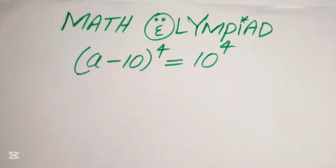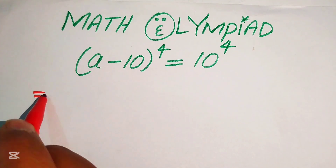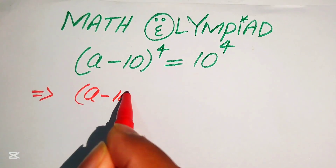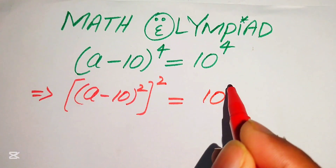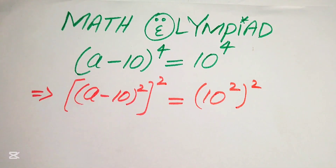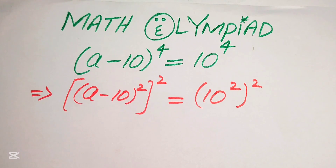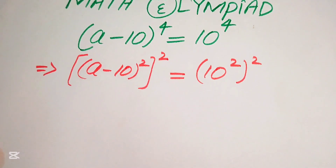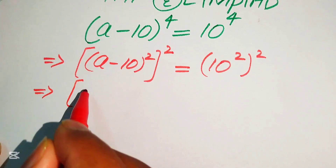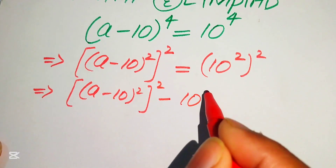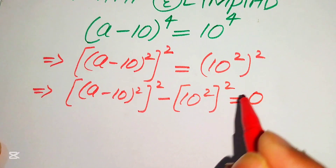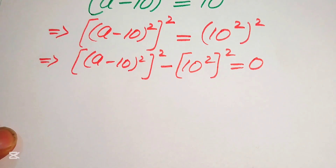The very first step we are going to do is rewrite this equation. We break the exponent and it will be written as (a minus 10) squared, whole squared, equals 10 squared whole squared. In the next step we move 10 squared whole squared to the left hand side, giving us (a minus 10) squared minus 10 squared, whole squared, equals 0. Here we can apply a nice algebraic formula.